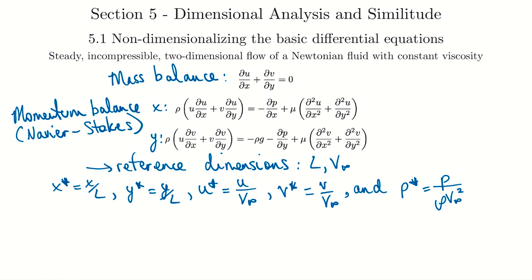The pressure scaling is a bit interesting: p-star equals p divided by rho times V-infinity squared — which looks a lot like dynamic pressure from chapter six. That's how we make the pressure dimensionless. It provides roughly a zero-to-one scaling in many situations. The reason we want all terms at roughly the same magnitude is so the coefficients that appear will directly tell us the relative importance of each term.